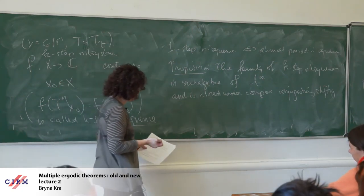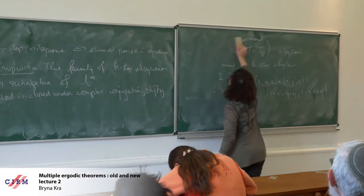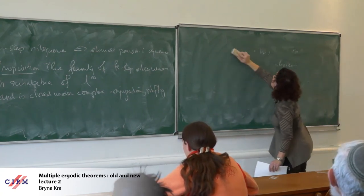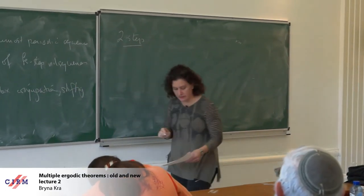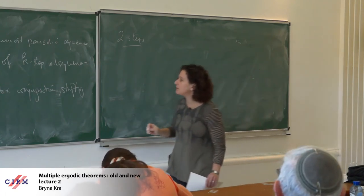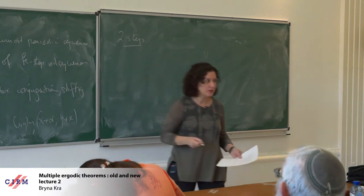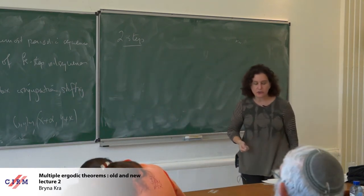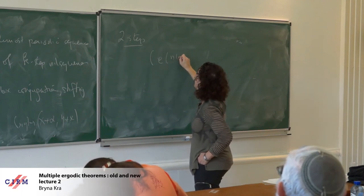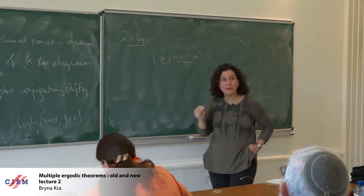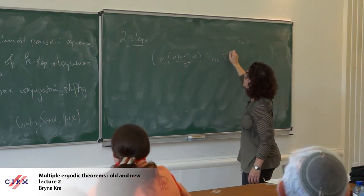For two-step, there is a characterization. Looking at what happened in the two-step case: the first system, the two-step system (x, y) maps to (x + alpha, y + x), is an affine two-step nil system. In this case it gives rise to sequences that look like e^{2πi n(n-1)alpha/2} — these are the quadratic orbits that you see coming up. Then there are more complicated sequences arising from the Heisenberg, involving products of theta functions.